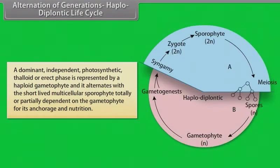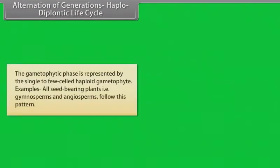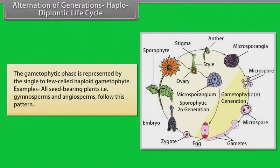Haplodiplontic life cycle. A dominant, independent, photosynthetic thalloid or erect phase is represented by a haploid gametophyte and it alternates with the short-lived multicellular sporophyte totally or partially dependent on the gametophyte for its anchorage and nutrition. The gametophytic phase is represented by the single to few-celled haploid gametophyte. Examples: All seed-bearing plants, that is gymnosperms and angiosperms, follow this pattern.